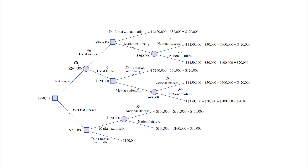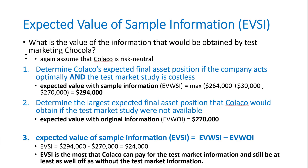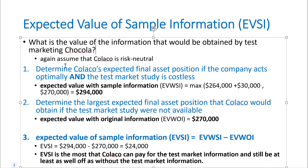With Expected Value of Perfect Information, we want to see if someone knew exactly what's going to happen, how much would that be worth — therefore, the value of the test market cannot exceed that. EVPI is an upper bound for EVSI. Let's dive deeper into EVSI first. We want to see what is the value of the information obtained by test marketing this product, and we'll assume the company is risk neutral. There are three steps. First, determine the company's expected final asset position — the value obtained by the backward method on the tree.